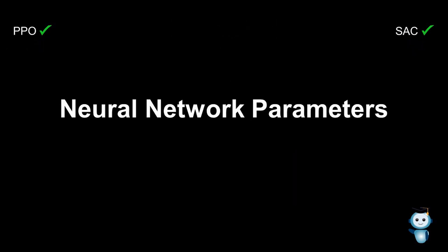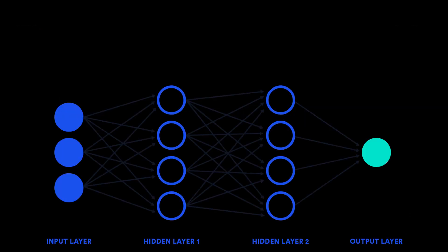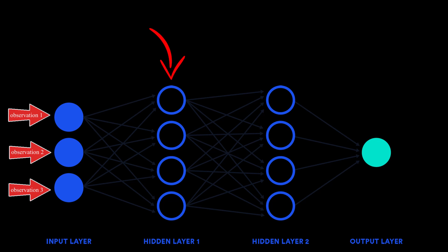Let's move from the general parameters to the neural network parameters. In a nutshell, a neural network is a chain of mathematical functions to detect complex patterns from data. Data, in this case, are the observations. The functions, which are also called neurons, are trained by analyzing if the observations or a trajectory of observations led to a reward. This way, the neural network learns to optimize its function parameters — also called weights — to increase the reward.